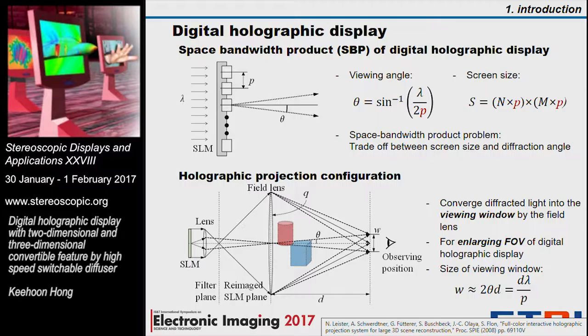The product of these two parameters is the space bandwidth product. As you can see in the equation, the pixel pitch is directly related to these two parameters. The pixel pitch is proportional to the screen size and inversely proportional to the diffraction angle. So it has a trade-off relationship, and both cannot be increased at the same time.